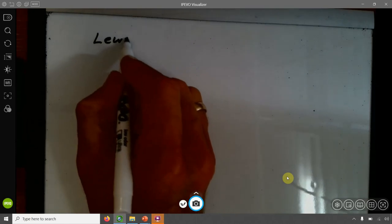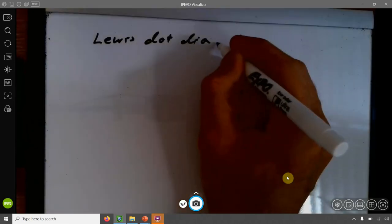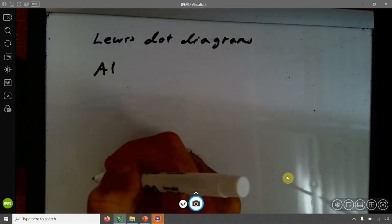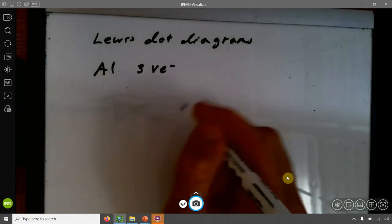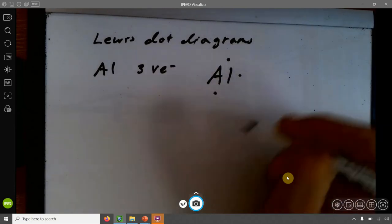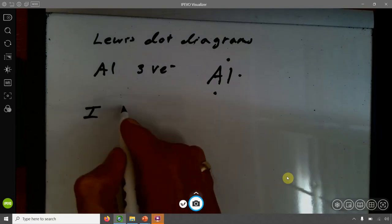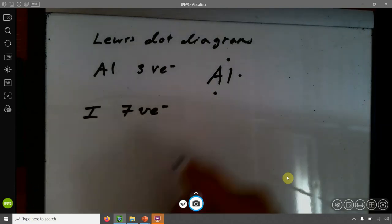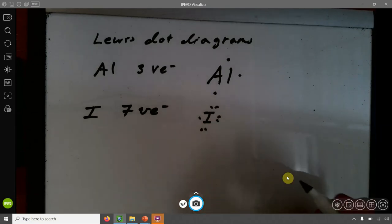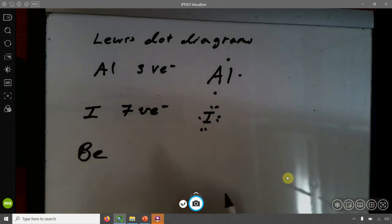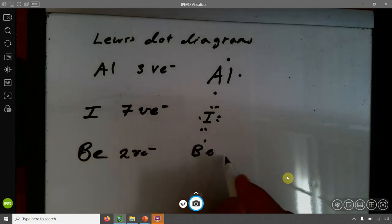Let's look at examples and see how we write this. Let's say someone asks you to write the Lewis dot diagram for aluminum. I look at the periodic table. This is in group 3A, so I know that I have three valence electrons. For three valence electrons, I'll have one, two, three. Let's say I have iodine. I have seven valence electrons. So I have I, one, two, three, four, five, six, seven. And beryllium has two valence electrons, so it will be one, two.